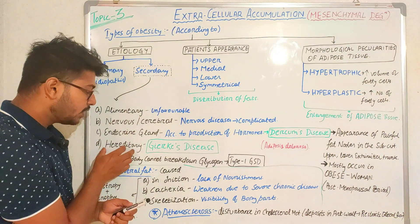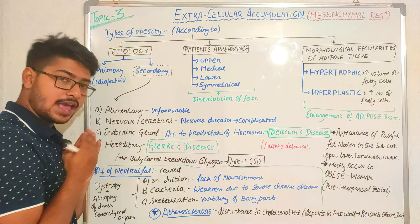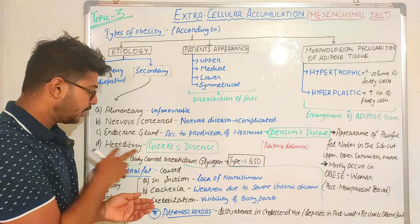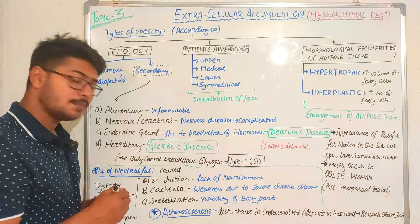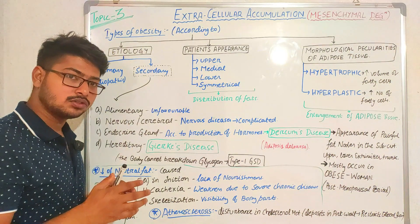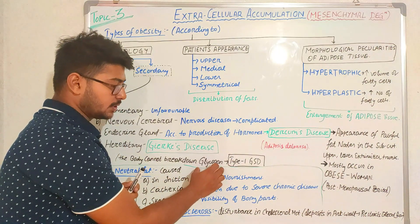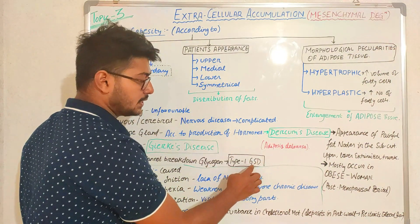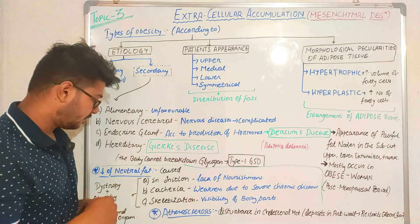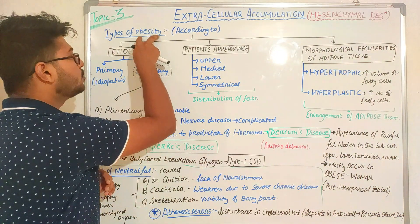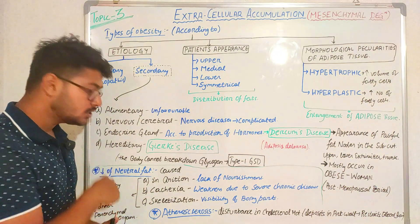Under hereditary obesity, if obesity is inherited from parents, an example is Gierke's disease. In Gierke's disease, the body cannot break down glycogen deposits — the body is unable to metabolize glycogen. It comes under Type 1 glycogen storage disease because glycogen is stored in the body itself.